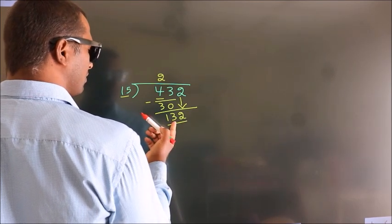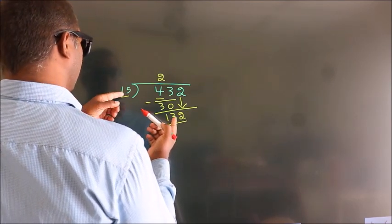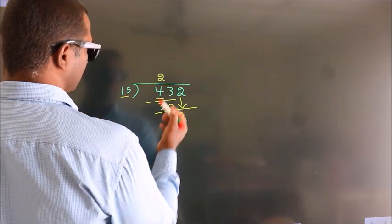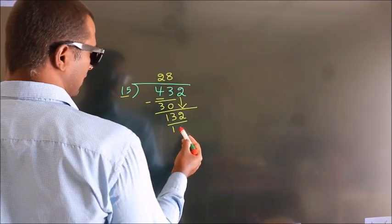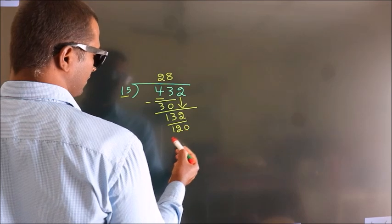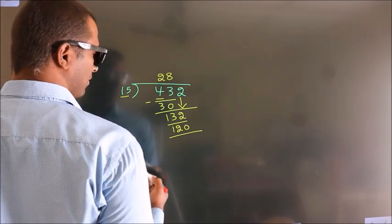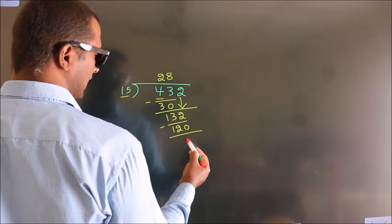A number close to 132 in the 15 table is 15 times 8, which is 120. Now we subtract. We get 12.